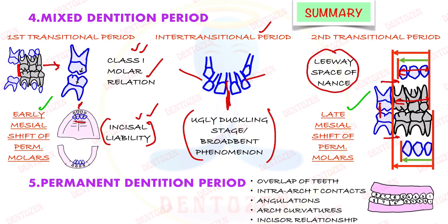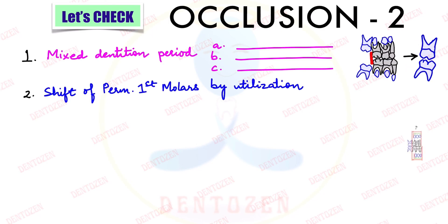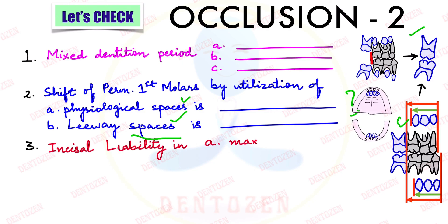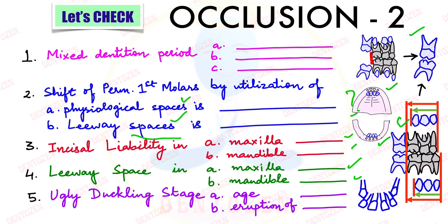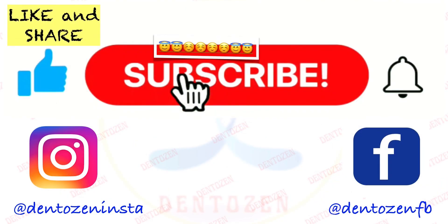Review questions: The mixed dentition period is divided into how many periods? What is the shift called when permanent first molars use physiological spaces in the early transitional period, and when they use leeway spaces in the late transitional period? What is incisal liability in the maxilla and mandible? What is leeway space in the maxilla and mandible? At what age does the ugly duckling stage occur, and with which erupting teeth does it correspond? That is all for this video. Keep watching, keep learning, keep smiling — good luck for your exams.